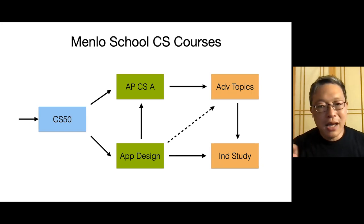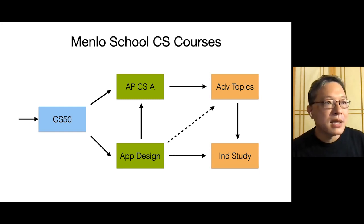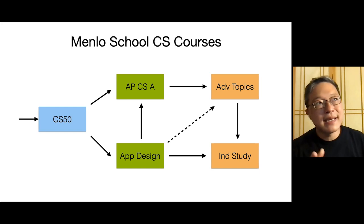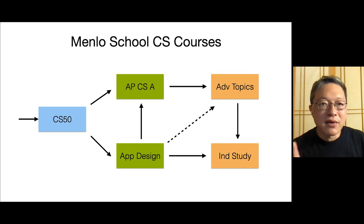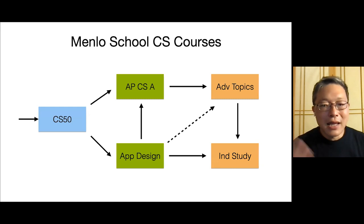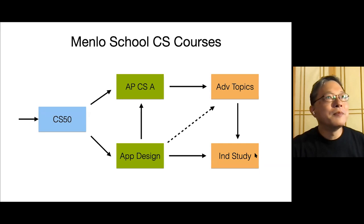After CS50, students have two choices: APCSA in Java or an app design course following Apple's Develop in Swift curriculum using Xcode, where kids actually create apps. After app design, kids would normally go to CSA, but with permission they might go to Advanced Topics, which covers data structures and the mathematical foundations of computer science. Generally the progression is CS50, then CSA, then Advanced Topics, and then we also have an independent study.